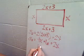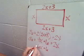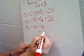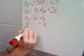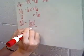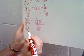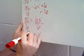4X and 2X gets me 6X plus 6 equals 36. And when I use inverse operations to get the variable by itself, I can see that X equals 5.